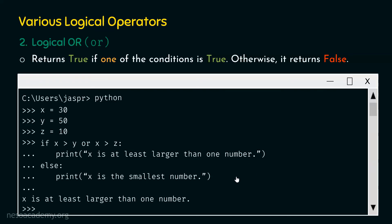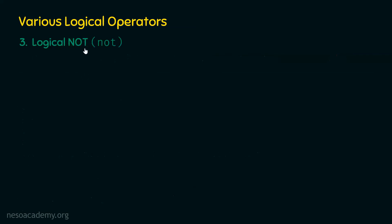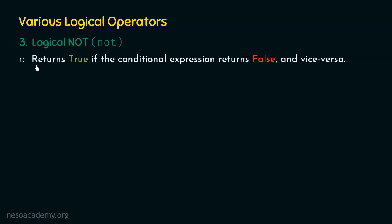Now let's move on to the third operator, which is logical NOT, denoted by 'not' — all in small letters. Logical NOT operator returns true if the conditional expression returns false, and vice versa. It does the opposite: it returns false if the conditional expression returns true.